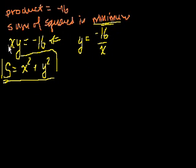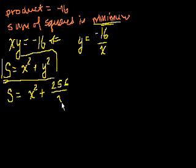So if we take this, I just divided both sides by x. If we take this and substitute it here, we get the sum of the squares of the two numbers is going to be equal to x squared plus y squared. Well, y is this. So what's this thing squared? Minus 16 squared is 256 and over x squared. So that's the sum of the squares of the two numbers.